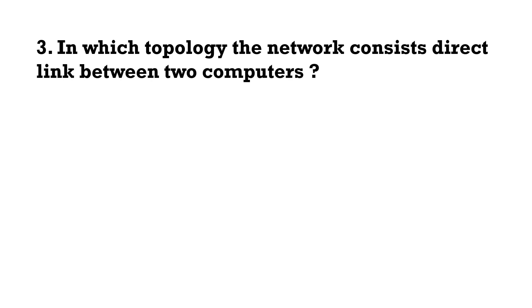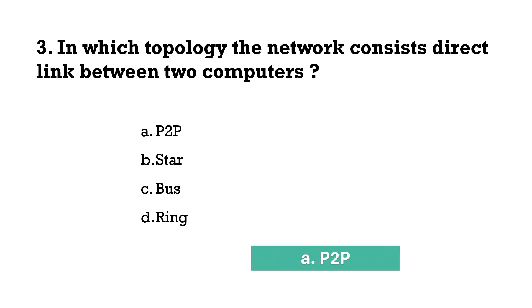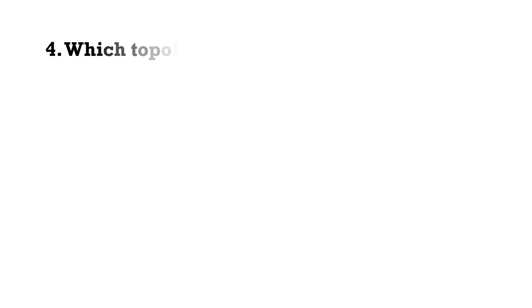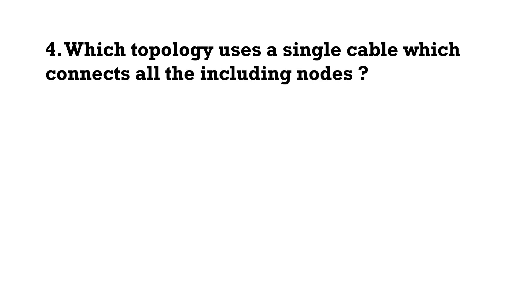In which topology does the network consist of a direct link between two computers? That is point-to-point topology. Which topology uses a single cable that connects all the included nodes? That is bus topology.